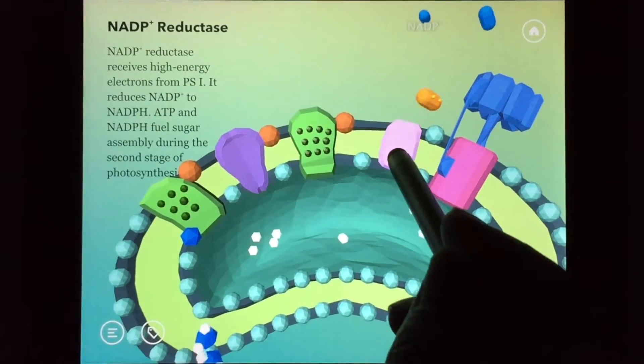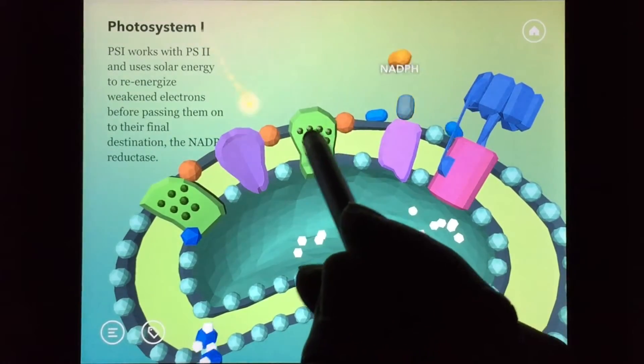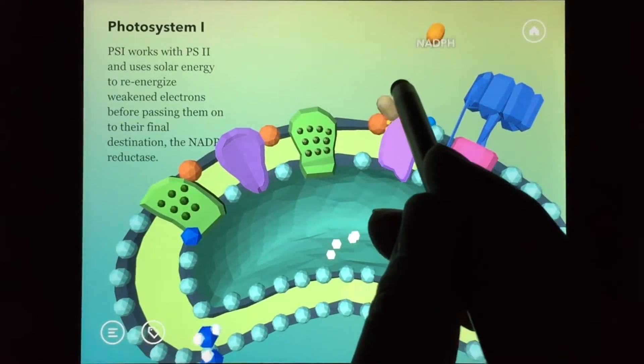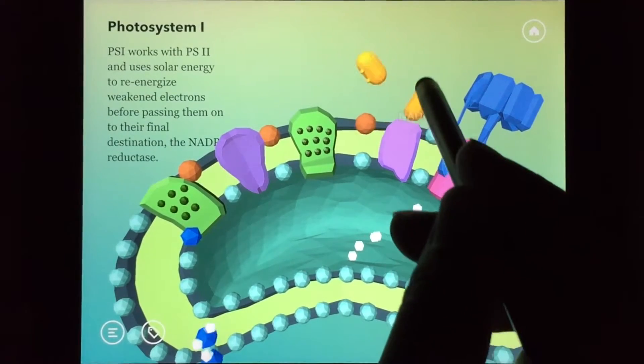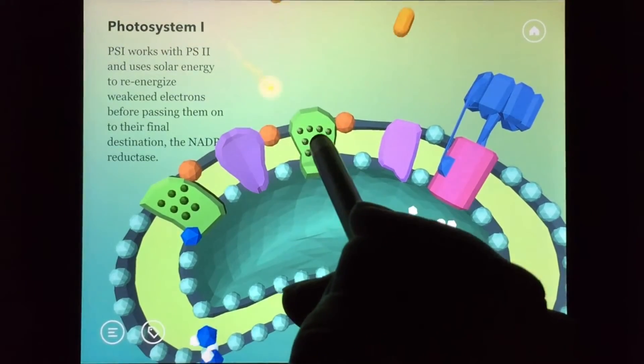This NADP plus reductase receives high energy electrons from photosystem 1, and these electrons are joined to this NADP plus, and then it becomes NADPH.